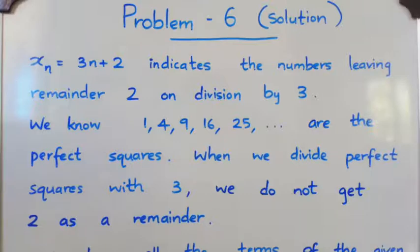When we divide these perfect squares by 3: 1 divided by 3 gives remainder 1, 4 divided by 3 gives remainder 1, 9 divided by 3 gives remainder 0, 16 divided by 3 gives remainder 1, and so on.